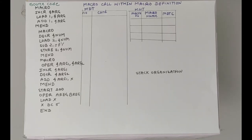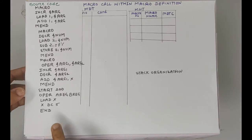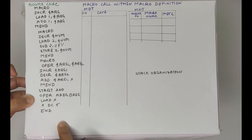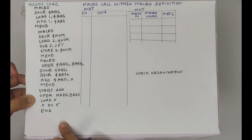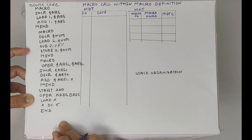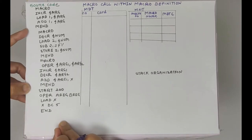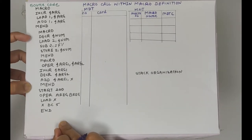Hello friends. Here we will solve an example of macro call within macro definition. For a detailed explanation of macro parameters, different data structures, and algorithms, please watch my previous videos. Here we will solve this example. This is our source code and we are going to convert this source code into target code, meaning we are removing macro definition as well as macro call.